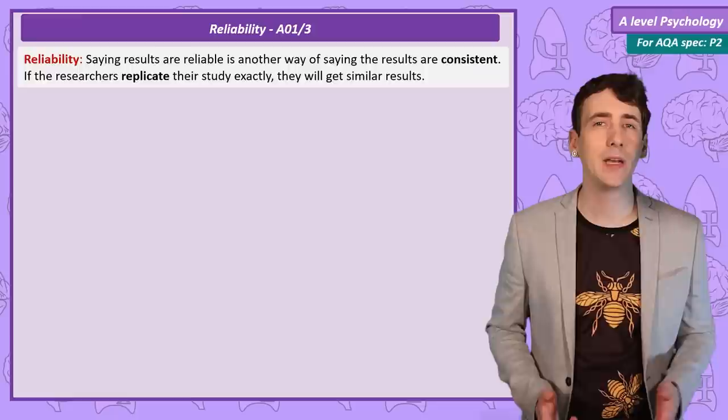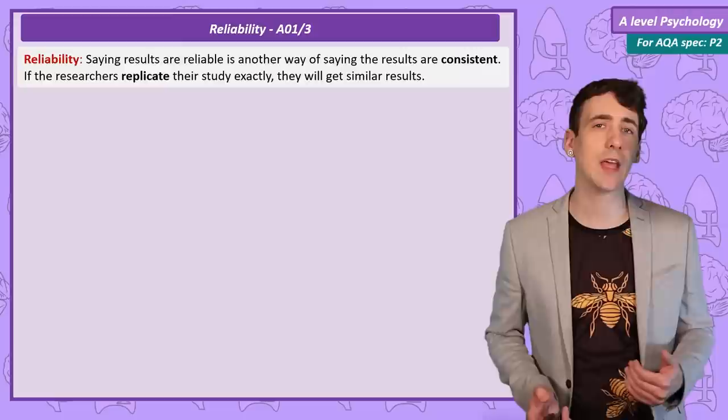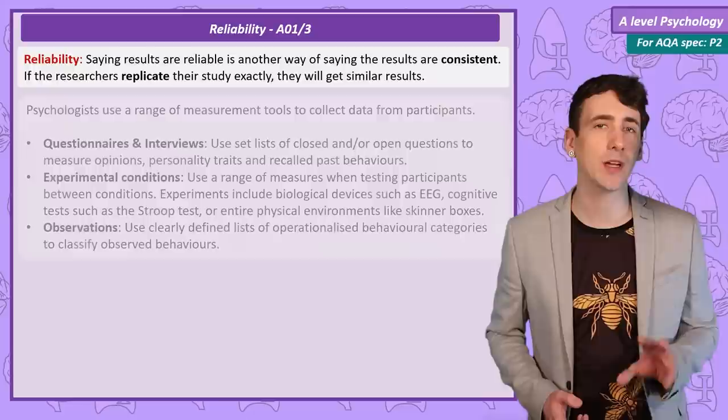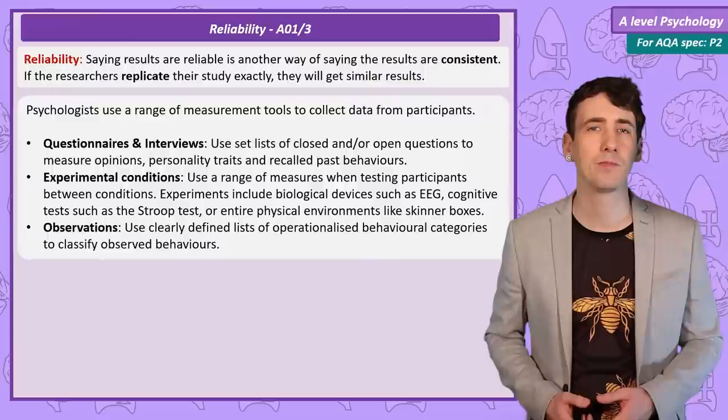Reliability. A simple definition would be: reliability is a measure of consistency, meaning a study or measuring device produces the same result when it is replicated. So while I have given the examples of rulers, scales and stopwatches, examples of measurement tools psychologists use are questionnaires, interviews, experimental conditions and observations.